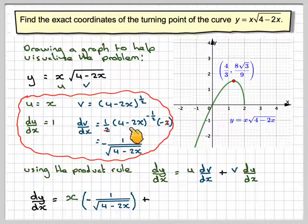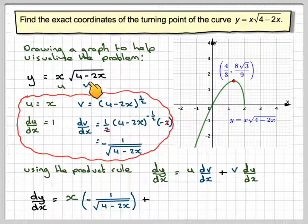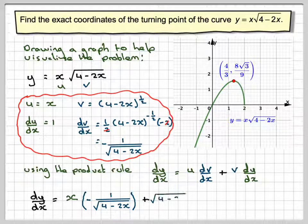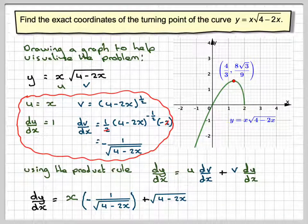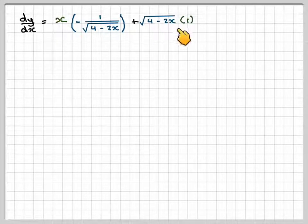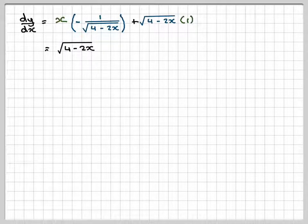Plus v, which is going to be 4 minus 2x. I'm going to write it in its original format, which is root 4 minus 2x times the derivative, which is 1. Writing that out again. I'm going to rearrange it a little bit. I'm going to write this first because this one's negative. So this will be square root of 4 minus 2x. I don't need the 1 because 1 times it, minus x over square root of 4 minus 2x.